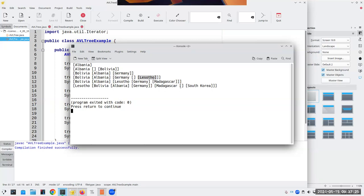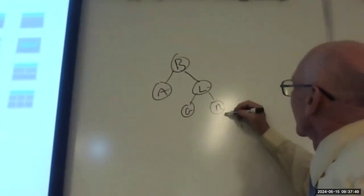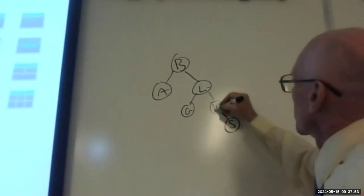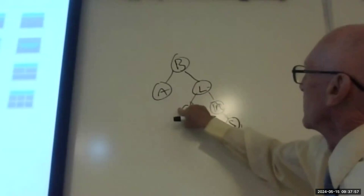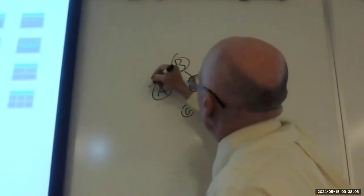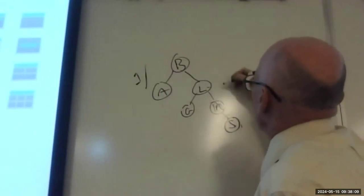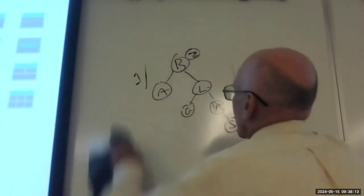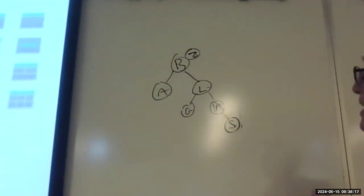Do you see how this is happening? As I add things I move them around to keep everything in balance. Now let's add S. The question is what's out of balance. This is a two and a one, so we're good with that. This is a height of one, and this is a height of one-two-three. So that means this is a negative two, which means we're going to have to move things around.